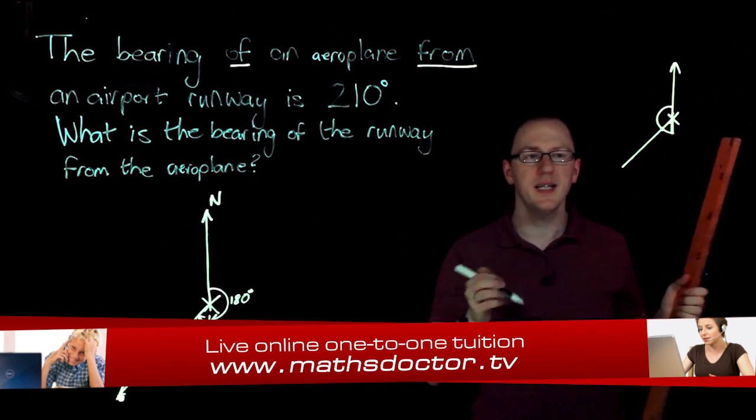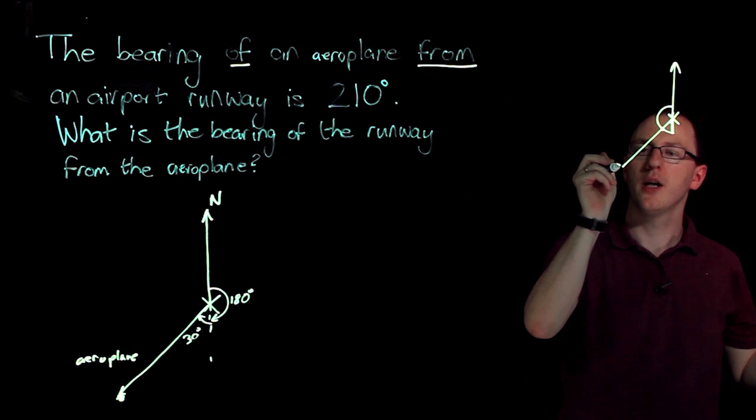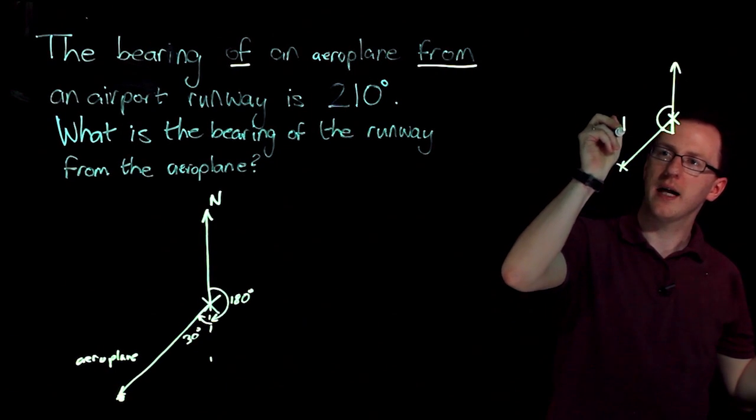Now we're not told what distance it is, so it doesn't matter where we mark it, but our plane would be somewhere along that line.